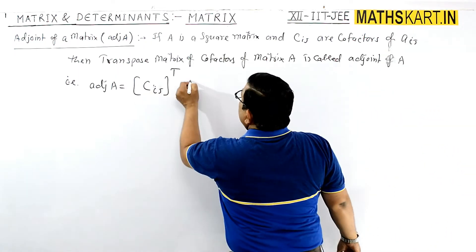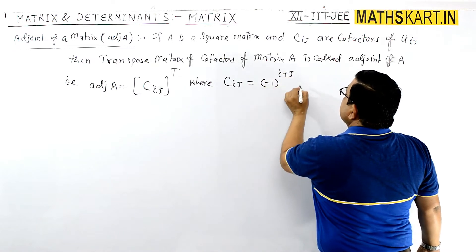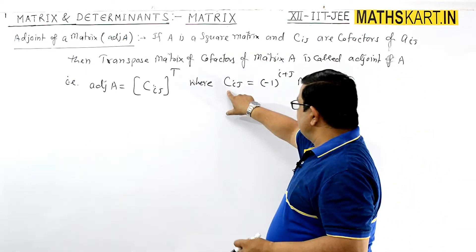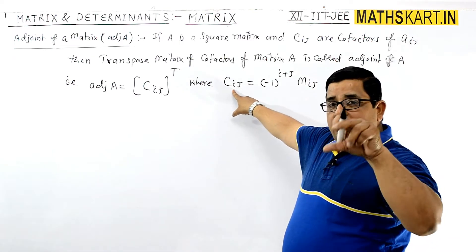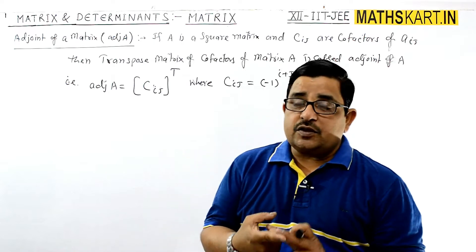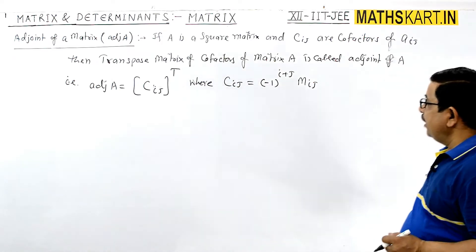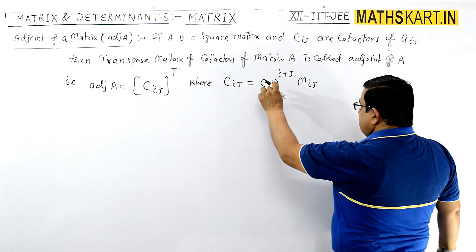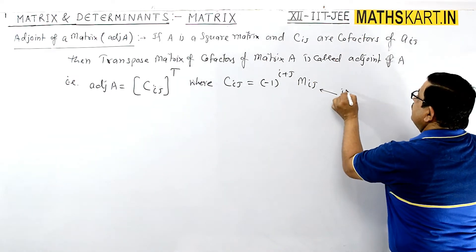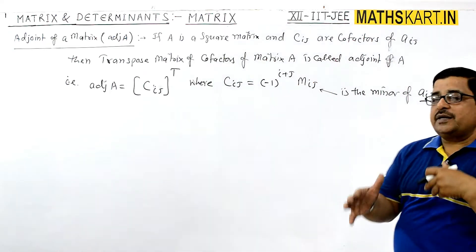Where each cofactor C_ij is given by the formula: C_ij = (-1)^(i+j) × M_ij. To get each cofactor, you write down C_ij. For a third-order square matrix there will be nine positions, and for each position you need one cofactor. Here M_ij is the minor of A_ij.